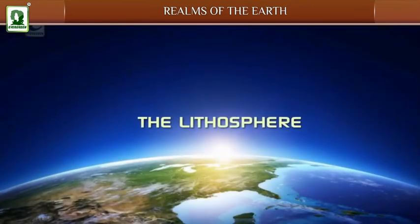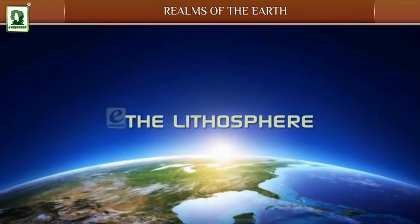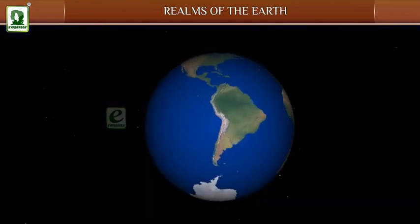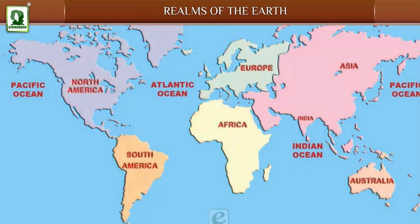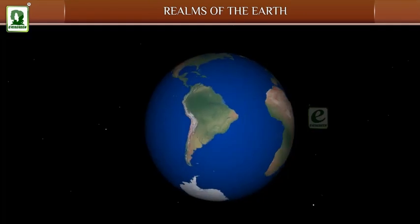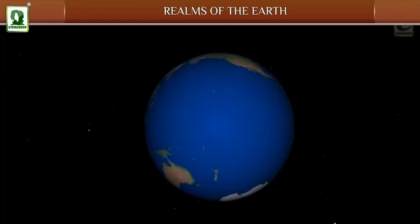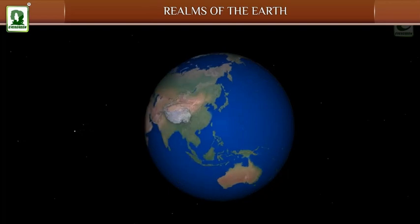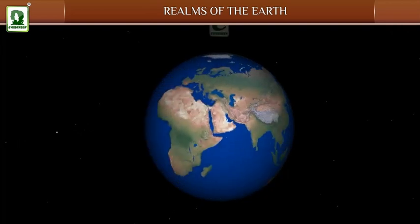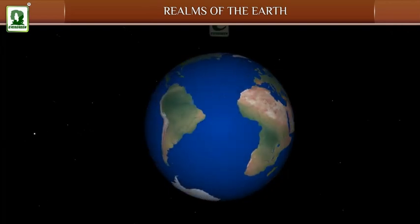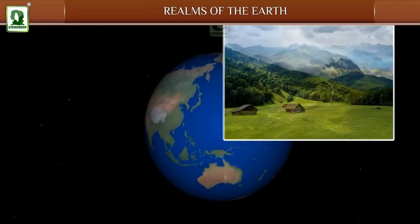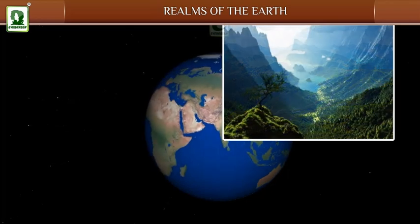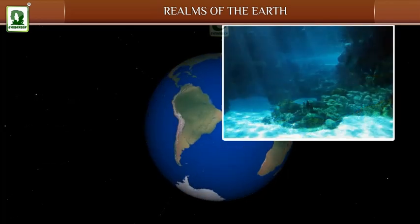The lithosphere is the solid upper crust, or the outer part of the earth, like continents and ocean floors. This is where we all live on earth. It is about 100 kilometers deep from the surface of the earth. The lithosphere includes several landforms such as plains, mountains, valleys, plateaus, and ocean floors.